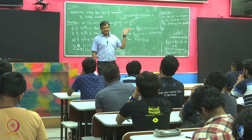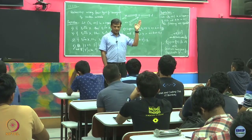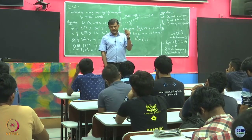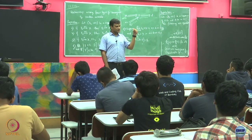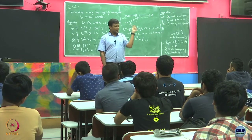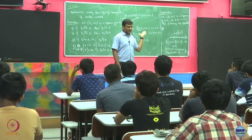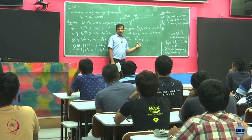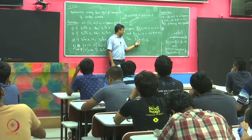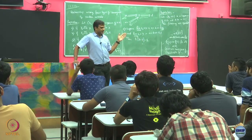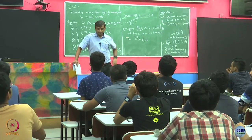Recall the example from the previous class where x_n(omega) = omega^n. For that example we said the limiting x is 0 on all omega, or alternatively x is 0 for all omega strictly less than 1, and x(1) = 1. Both were possible limits. But they are equivalent in the sense that they take the same values on the space with probability 1.